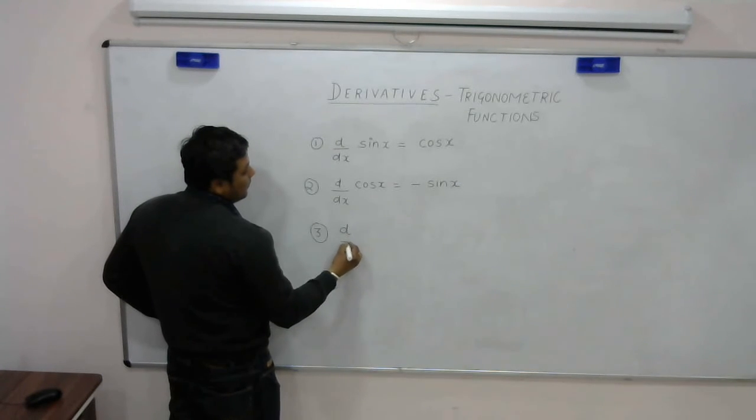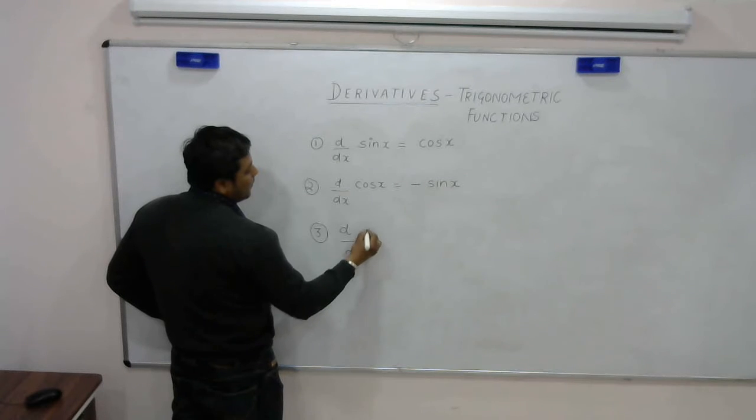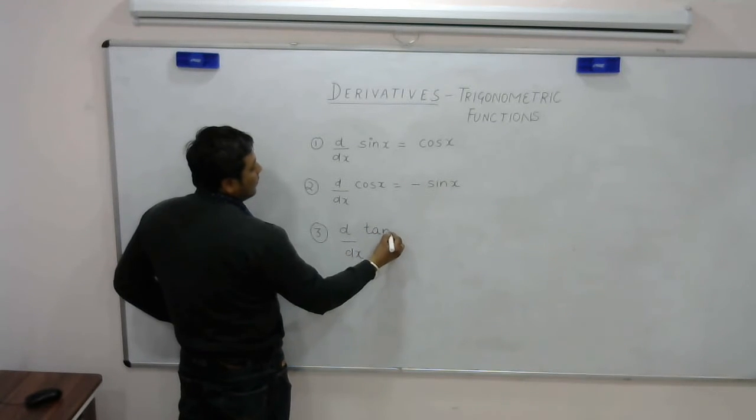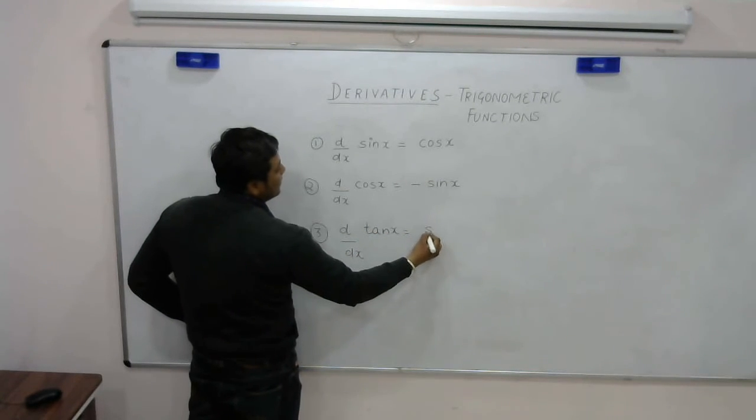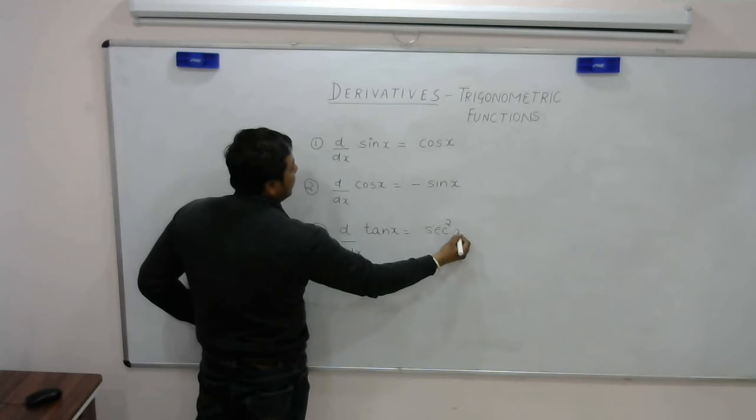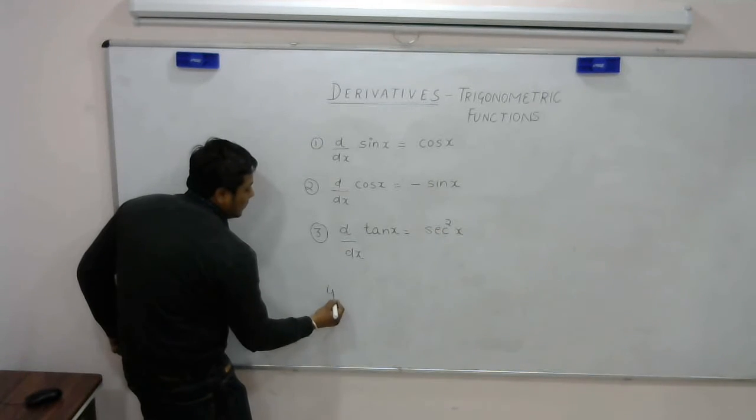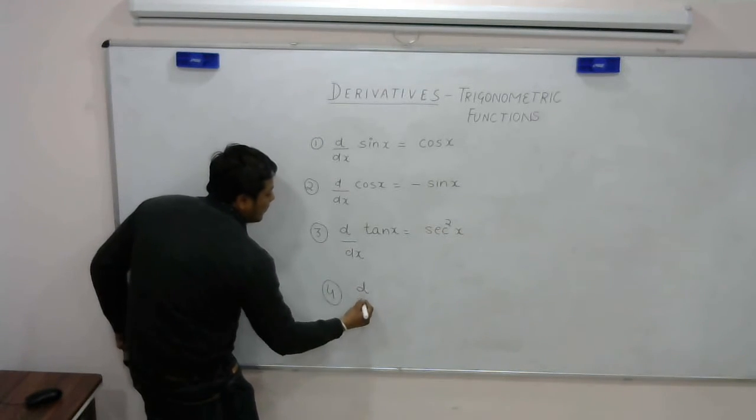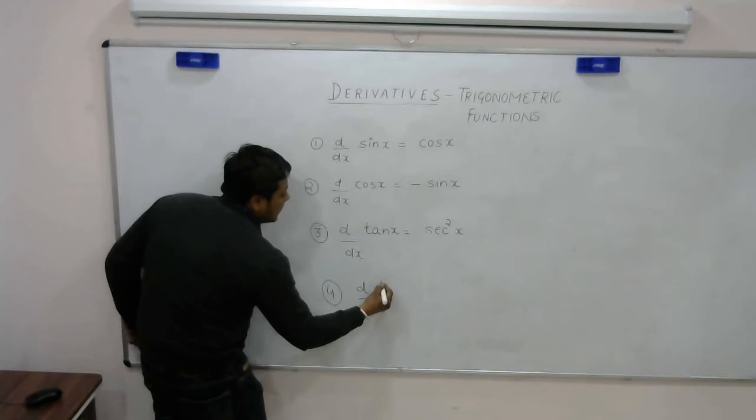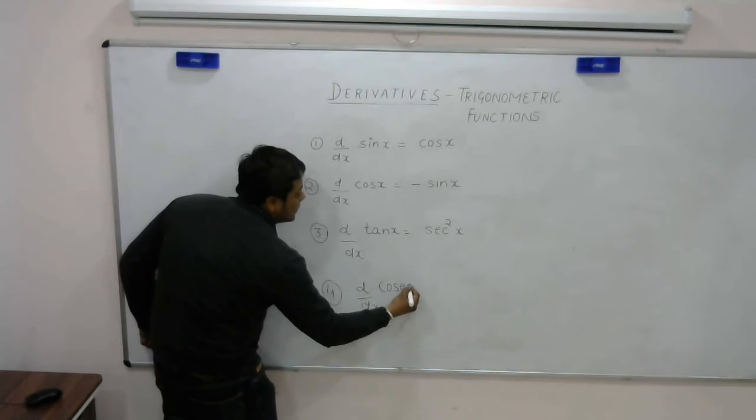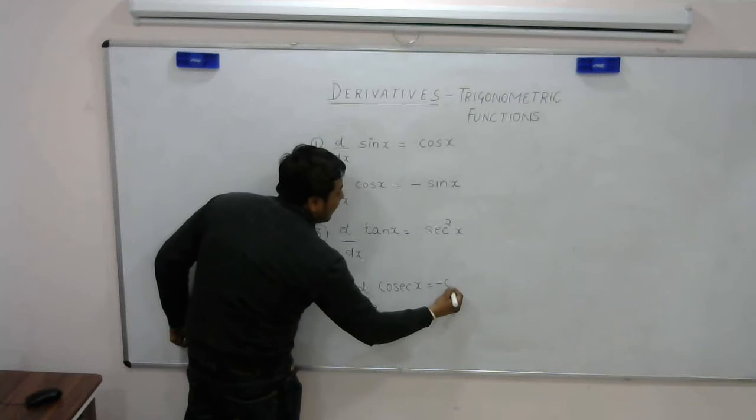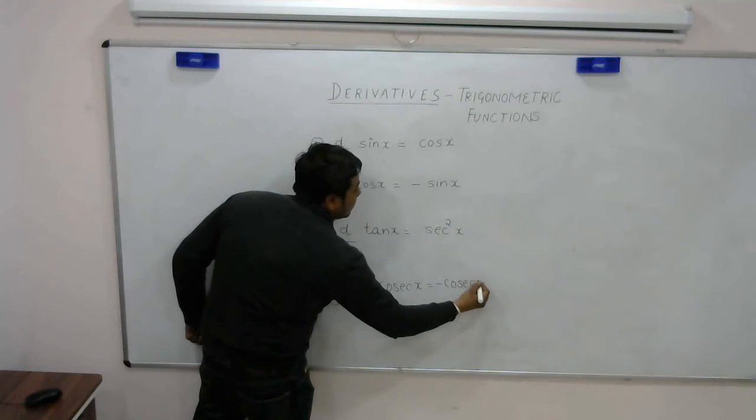Third is derivative of tan x. The formula for this is secant square x. Fourth is derivative of cot x, which is minus cosecant square x.